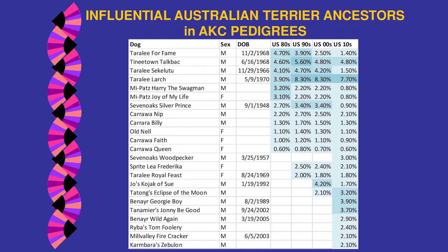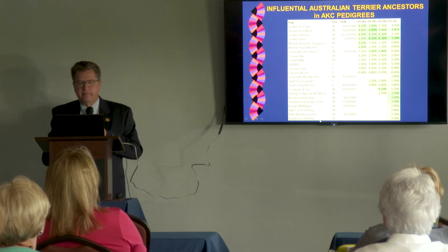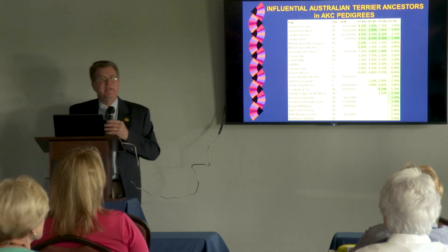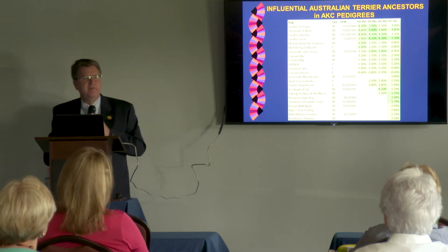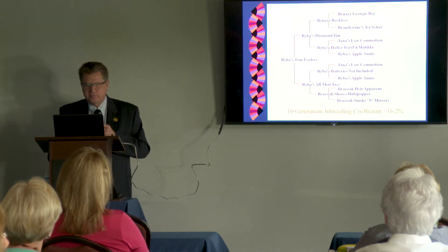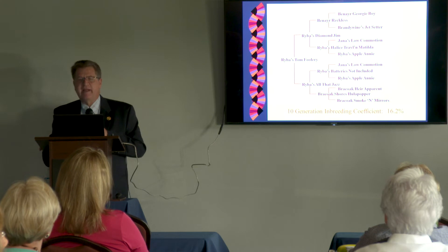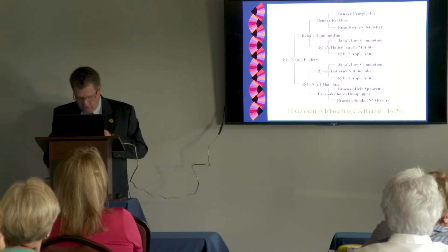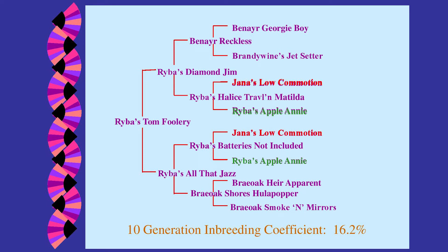That's just showing you the influence of how a breed develops over time. Now I want to look at a couple of individual pedigrees of dogs and talk about what the pedigree tells us and what you're actually doing to the genes of your dogs as you do your breedings.